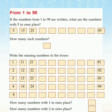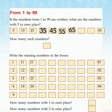What can you see here? There is a heading from 1 to 99. If the numbers from 1 to 99 are written, what are the numbers with 5 in the 1's place? So you can see the first number is 5, then 15 — in 15 the 5 is in 1's place. In 25 the 5 is in 1's place. The next number will be 35, then 45, then 55, then 65, 75, 85, and at last 95. So in every number, 5 is in the 1's place.